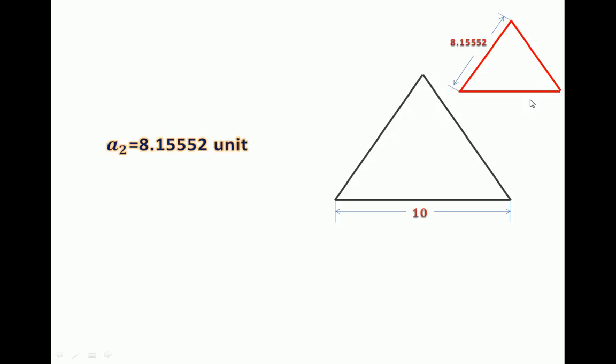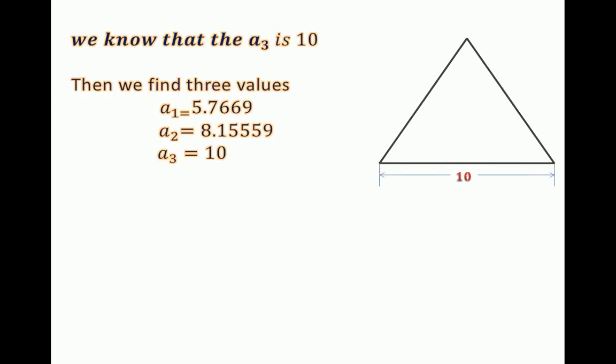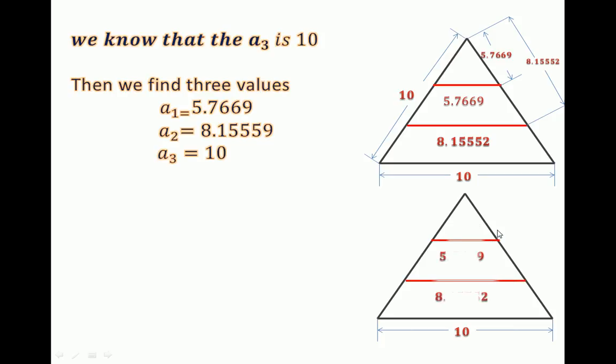We now know that A3 = 10 because it is the given value. So we have found three values: a1 = 5.7669, a2 = 8.1559, and a3 = 10. This is our regular triangle. This is the a1 triangle, and this is a2, which we have just found.